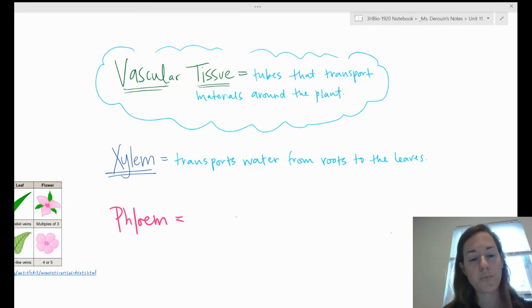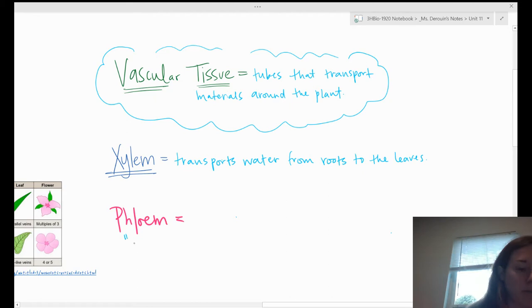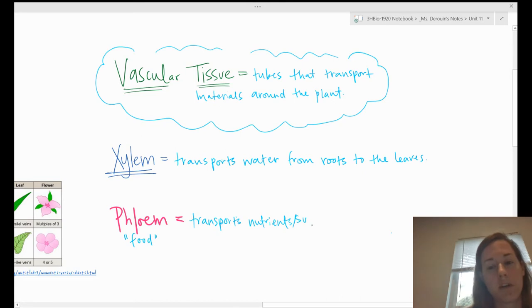The other type of vascular tissue is phloem, which you can remember because phloem is for food and it makes the same sound. Phloem transports nutrients slash sugar from the leaves to the roots or a storage organ, which would probably be a fruit.